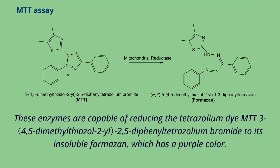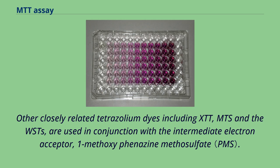These enzymes are capable of reducing the tetrazolium dye MTT (3-(4,5-dimethylthiazol-2-yl)-2,5-diphenyltetrazolium bromide) to its insoluble formazan, which has a purple color. Other closely related tetrazolium dyes including XTT, MTS, and the WSTs are used in conjunction with the intermediate electron acceptor 1-methoxyphenazine methosulfate.